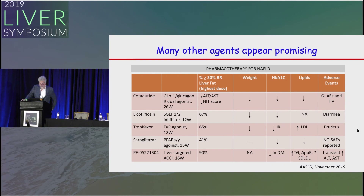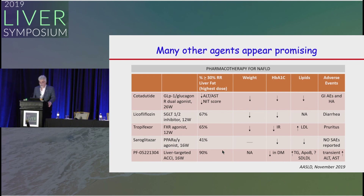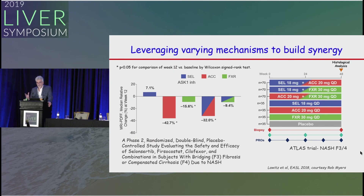There are many other promising agents from the ASLD, including other FXR agonists and PPAR agonists. Looking at 30% relative reduction in liver fat using MRI-PDFF, many show significant improvement. We talked about 30% reduction correlating with a two-point improvement in histologic score. There are also combination approaches using an ASK-1 inhibitor, an ACC inhibitor, and an FXR agonist, and we'll see more and more trials using combinations of agents.